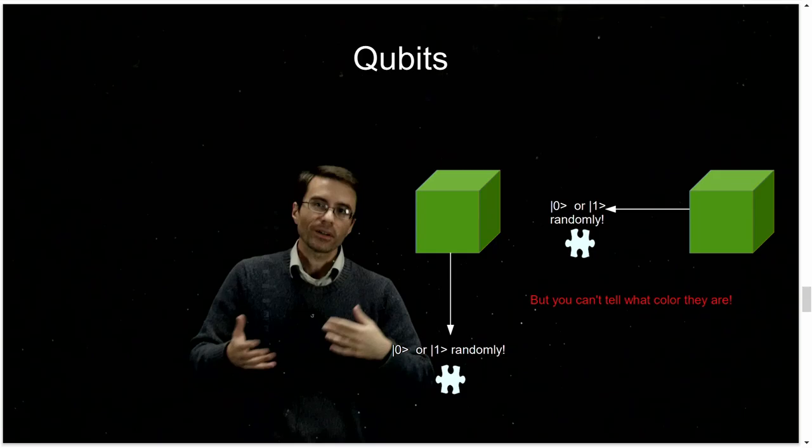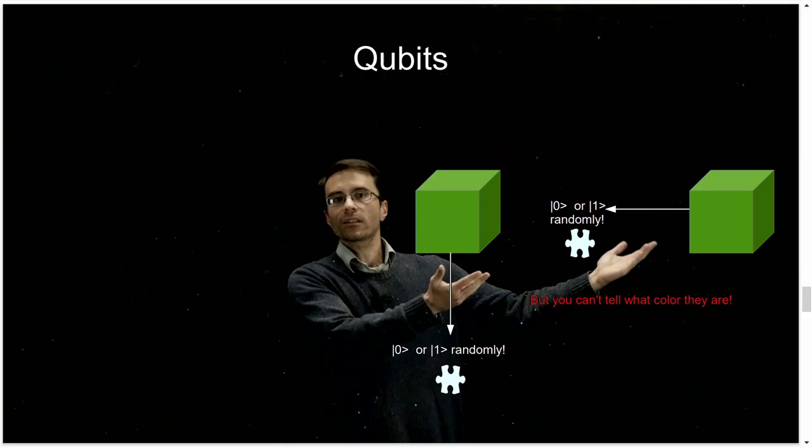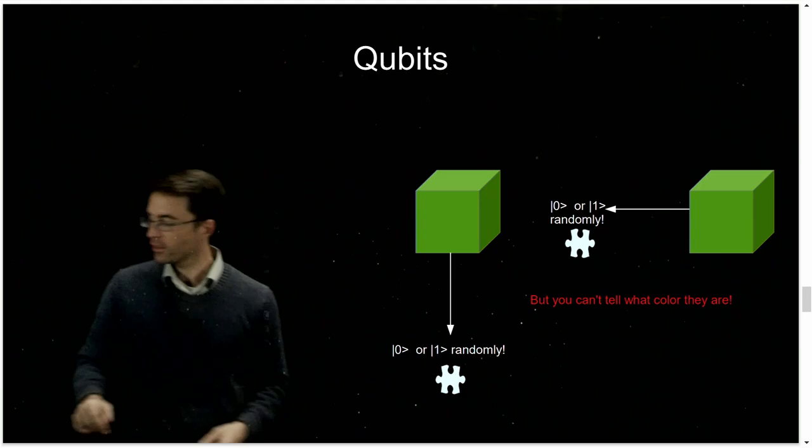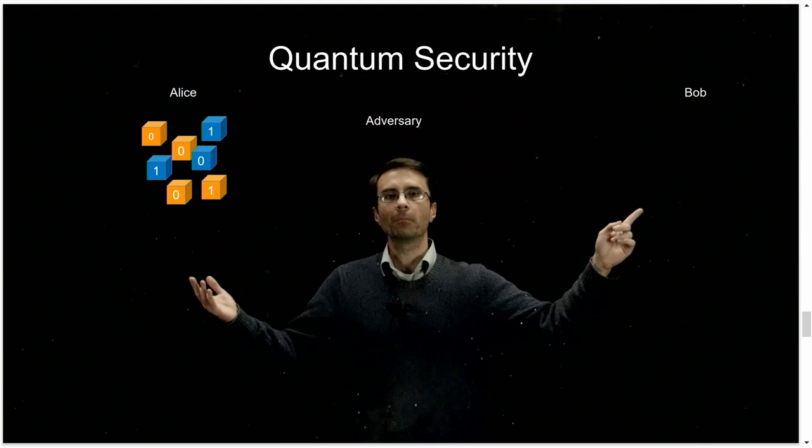Finally, if I don't tell you what color box it is — if I don't tell you what angle to look at it — they all look the same. So if I just give you quantum bits, they all look the same. You have no idea which way to look, and once you look, it's destroyed. This is how we can sort of send information securely.